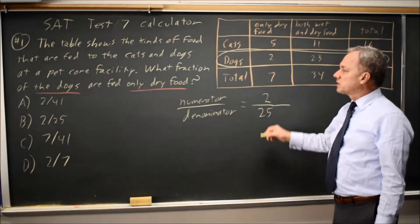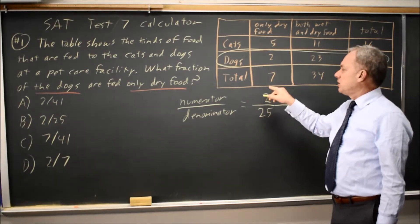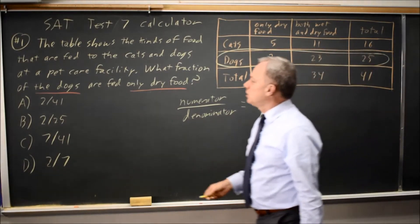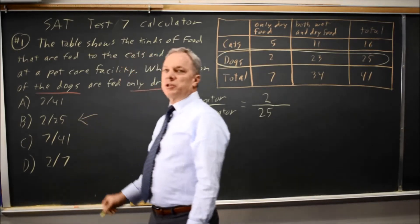So the total fraction of dogs that are fed only dry food is dogs fed only dry food over all dogs is 2 over 25, which would be choice B.